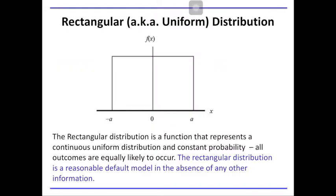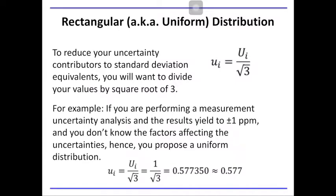The other type of distribution that can be used is what we call the rectangular distribution. This distribution is a function that represents a continuous distribution with constant probability, meaning all outcomes are equally likely to occur. This distribution is a reasonable default model in the absence of any other information. For example, if you are to undertake a baseline study in the determination of a particular analyte in a given place, it might be good to use rectangular distribution since you don't have any other prior information.